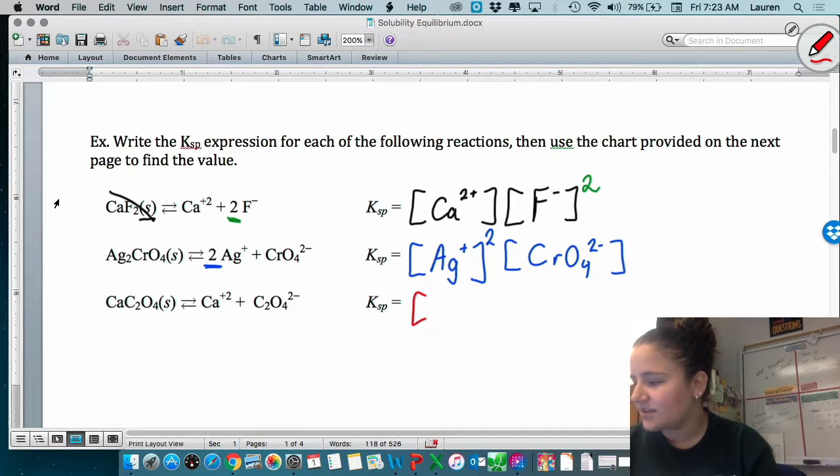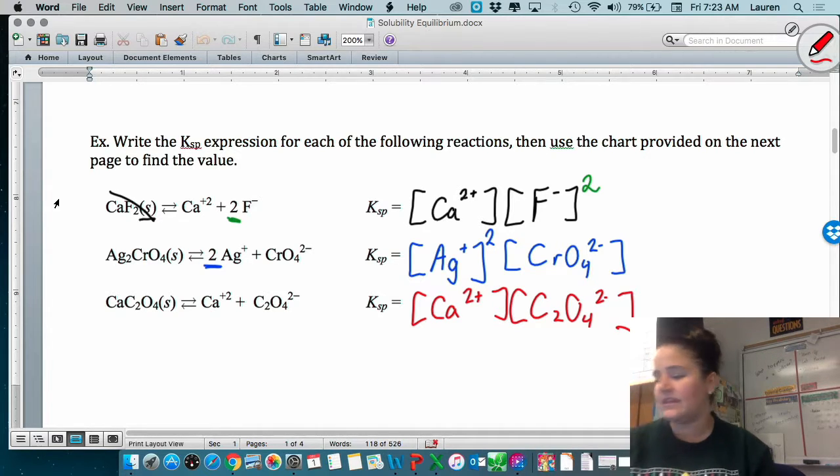Check and see if you got it right. You should have just the calcium and the oxalate. No exponents at any of them there.